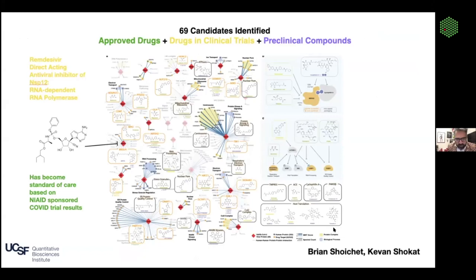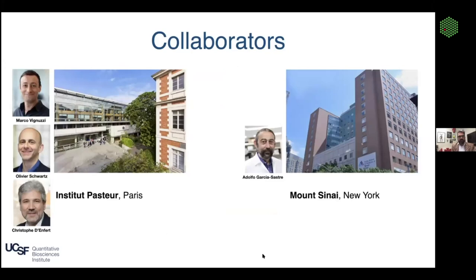One of the goals here was to look at the human proteins and then identify drugs and compounds known to bind one of these human proteins, to see if they had antiviral effects. In total we had 69 — a mixture of FDA-approved drugs, compounds in clinical trials, and pre-clinical compounds as well. Here's remdesivir, targeting NSP-12. The question is whether any of these other drugs have antiviral effects.